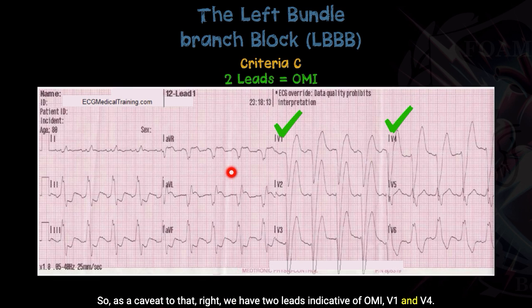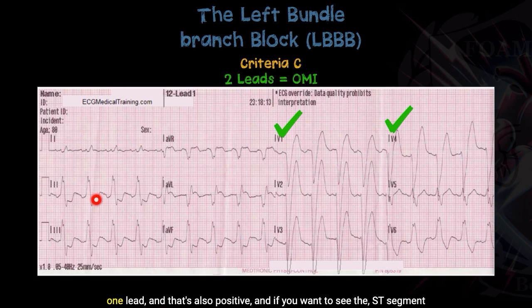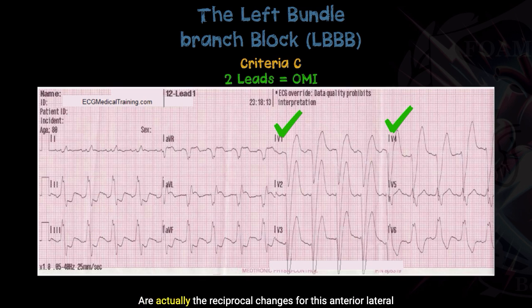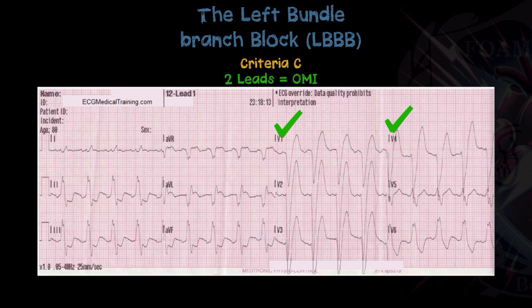As a caveat, we have two leads indicative of OMI: V1 and V4. Hopefully from the other videos, you noticed that out in AVL there was a positive criteria A — concordant ST segment elevation in one lead, which is also positive. The ST segment depressions along with the T wave inversions are actually the reciprocal changes for this anterior lateral STEMI in the presence of a left bundle branch block. Criteria C can be confusing, but you can often rely on seeing other leads in contiguous areas that may show positivity for criteria A or B.